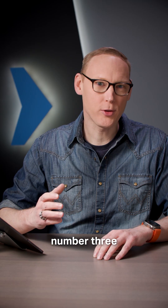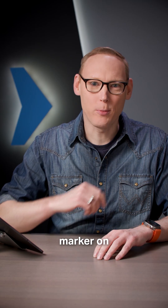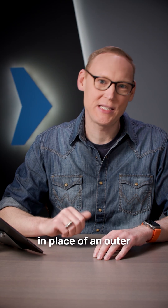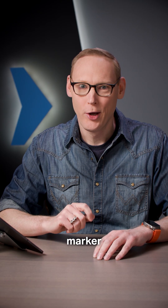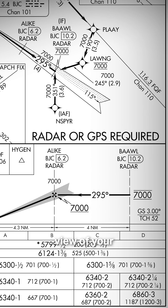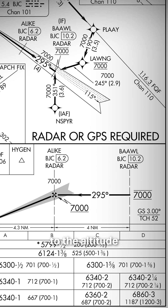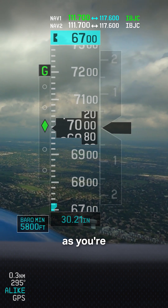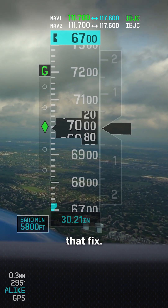And then number three: the outer marker on the procedure, or the fix in place of an outer marker, will include the glide slope altitude as it crosses through the fix on the profile view of your approach chart. I would compare that altitude to the altitude that you see as you're flying over that fix.